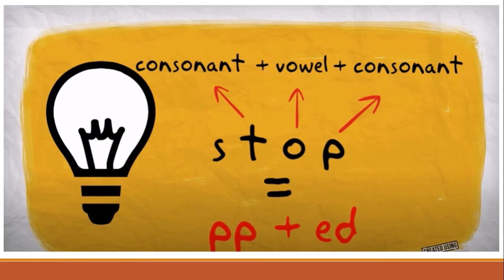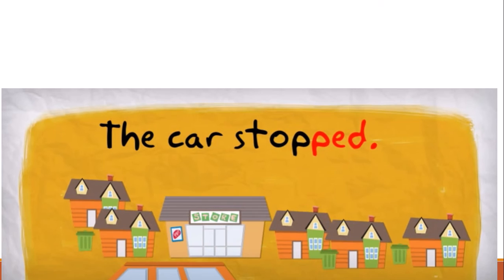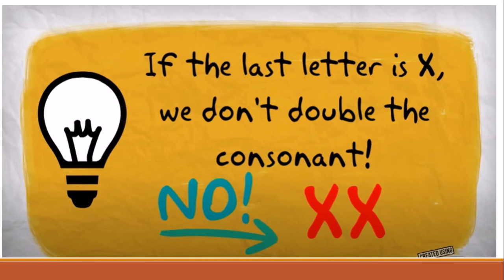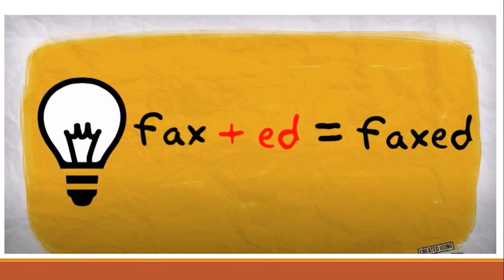Rule number four: if a verb has a consonant-vowel-consonant pattern, I have to double the last letter and add 'ed'. Like the verb 'stop' — 's' consonant, 'o' vowel, 'p' consonant — so I double 'p' and add 'ed': stopped. However, if the last letter is 'x', we do not double it. For example: fax → faxed.